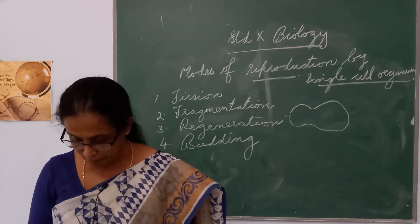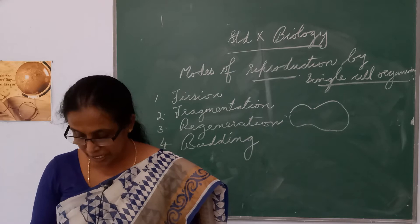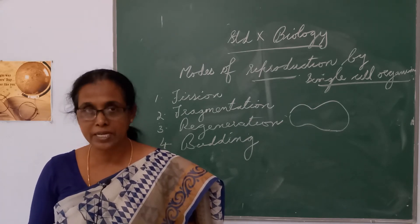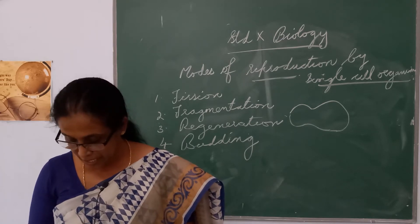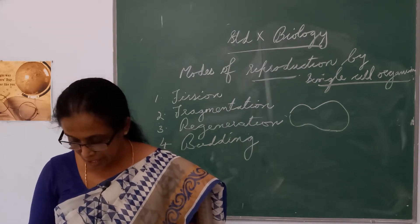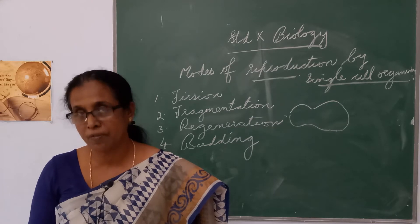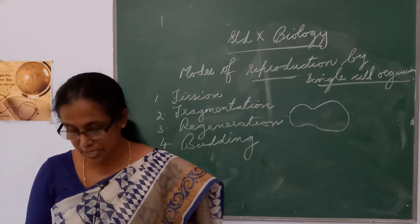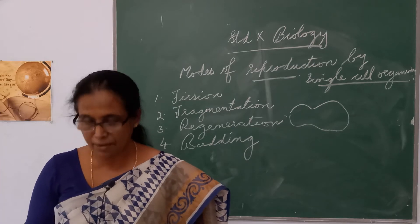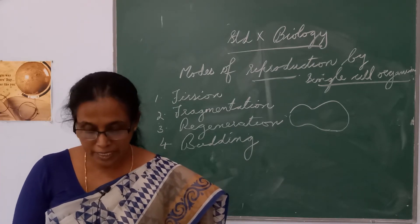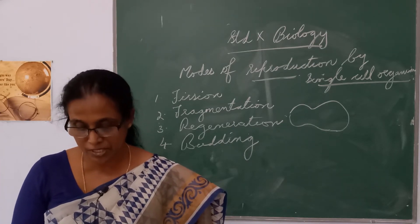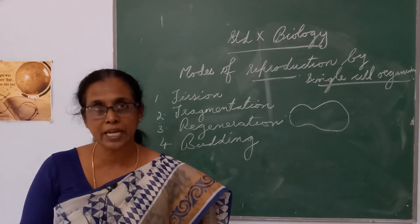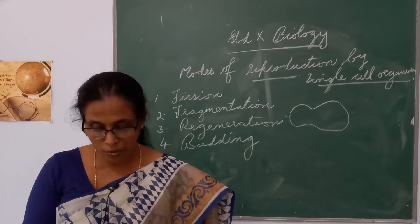For example, in the case of Leishmania — Leishmania is causing a disease known as kala-azar. There also this type of binary fission occurs. In some organisms, binary fission occurs in a definite orientation in relation to their structure.